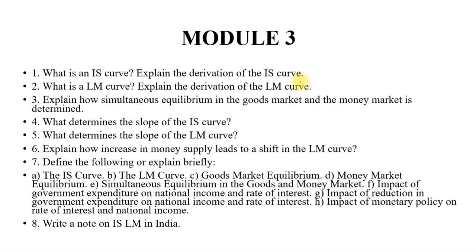Explain how an increase in money supply leads to a shift in the LM curve. You can also get concept questions on: IS curve, LM curve, goods market equilibrium, money market equilibrium, simultaneous equilibrium in goods and money market, impact of government expenditure on national income and interest rate, impact of reduction in government expenditure on national income and interest rate, and impact of monetary policy on the rate of interest and national income. Lastly, write a short note on IS-LM in India.